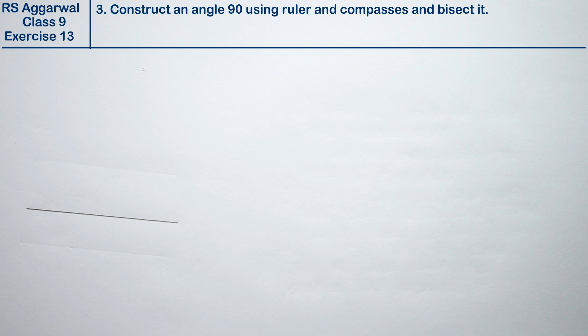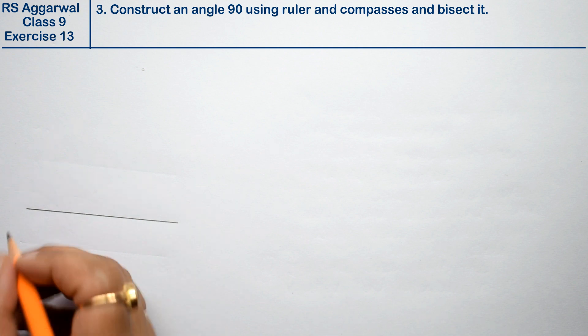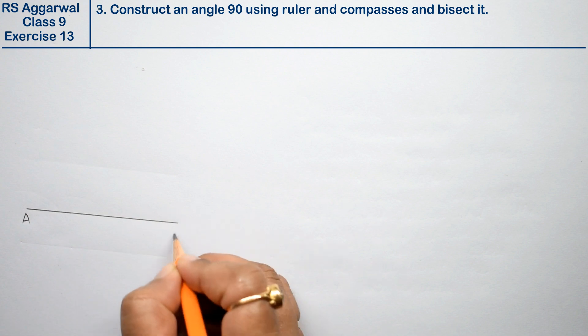We have learned how to make a 90 degree angle in the previous classes. This is point A and this is point B.